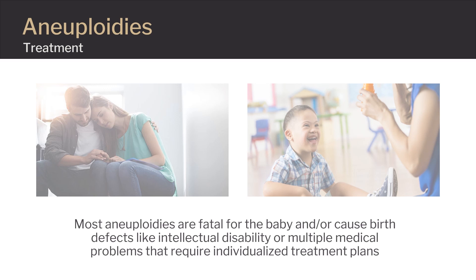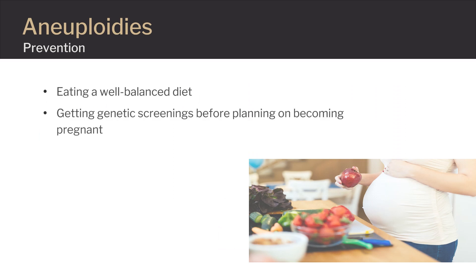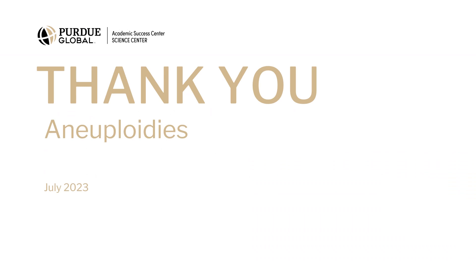It is important to note that individuals who experience a miscarriage can have subsequent normal pregnancies and births. Although aneuploidies cannot technically be prevented, we can try to minimize the risk by taking a few simple steps: eating a well-balanced diet, getting genetic screenings done before planning on becoming pregnant, not smoking or drinking alcohol, and taking prenatal vitamins. If an individual has a miscarriage as a result of an aneuploidy, it is possible for that individual to have a subsequent healthy pregnancy. Aneuploidy miscarriages are a result of a genetic mutation that is spontaneous and unpredictable. Thank you for watching and have a great day.